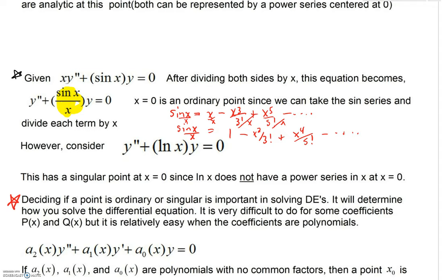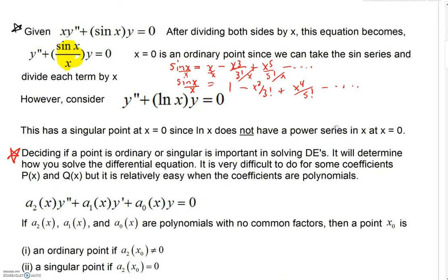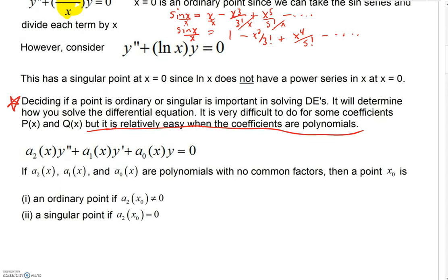It will determine how you solve the differential equation. It can be very difficult to do for some coefficients, p and q, p of x and q of x, but it's relatively easy when the coefficients are polynomials. That's really what we're going to take a look at today. Let's say that you have this differential equation, a sub 2 of x, a sub 1 of x, a sub 0 of x are your coefficients, coefficient functions, and they are all polynomials. Also, they have no common factors. We're going to start off with that.